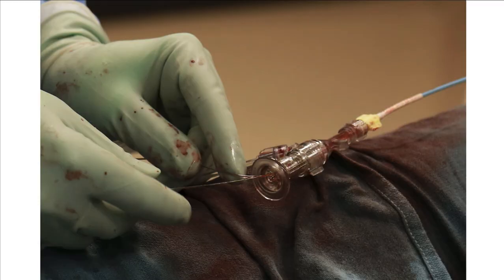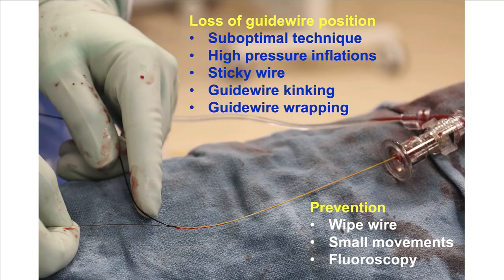Step number 12 is to remove the balloon. This is done using both hands over the wire. It can sometimes be difficult because high-pressure inflations can make the balloon sticky, the guide wire may be sticky, or there may be kinking or wrapping of the guide wire. To prevent losing guide wire position while removing the balloon, it is important to wipe the wire carefully before removal and perform small movements. Pulling the balloon back with the left hand while fixing the guide wire with the right hand is preferred. If it is very hard to pull the balloon back, performing fluoroscopy during withdrawal helps ensure the guide wire is not moving.